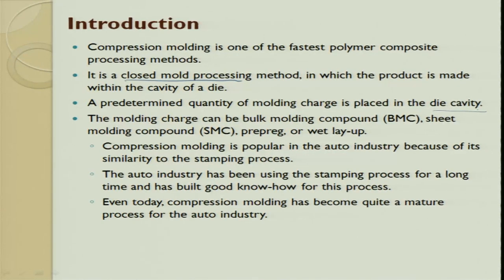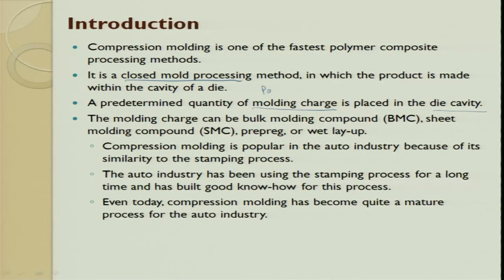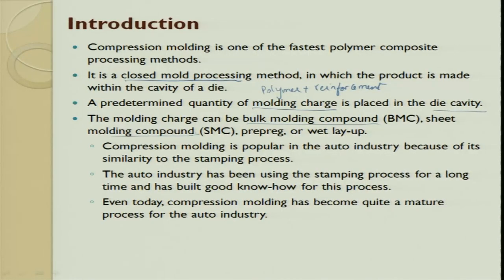Unlike injection molding where raw material flows through a barrel into a die, here a mold charge is prepared — a polymer plus a reinforcing agent such as chopped strand mat. The polymer can be thermoplastic or thermoset. The mold charge can be a bulk mold compound (BMC) or a sheet mold compound (SMC), which refers to the surface-to-volume ratio of the component.